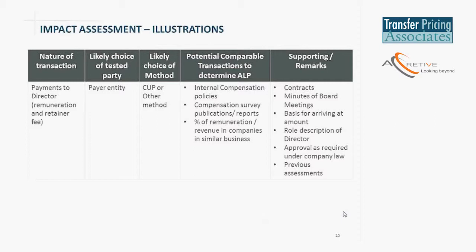A question on the threshold: domestic transfer pricing would not apply if the value of specified domestic transactions — transactions between Indian group entities — is less than 5 crores. However, even in those situations you have to substantiate that the value complies with the fair market value theory. So though you do not need to formally maintain documentation or file a chartered accountant's report, in a scrutiny situation you would need to substantiate the price. So if it's less than 5 crores, domestic transfer pricing would not apply.